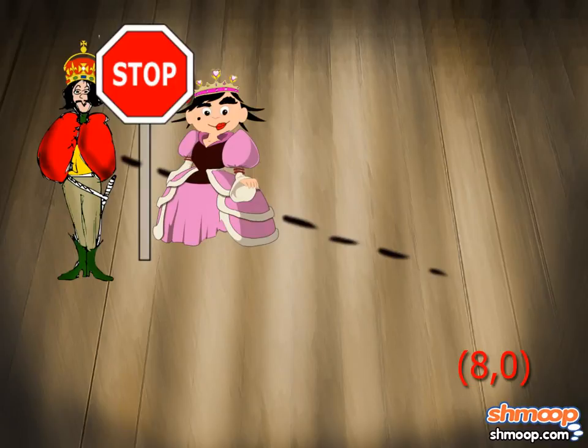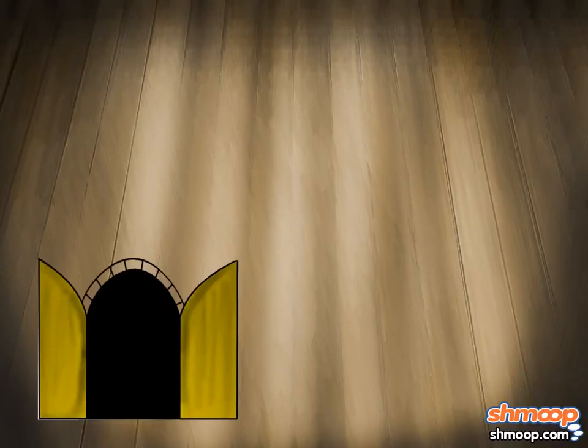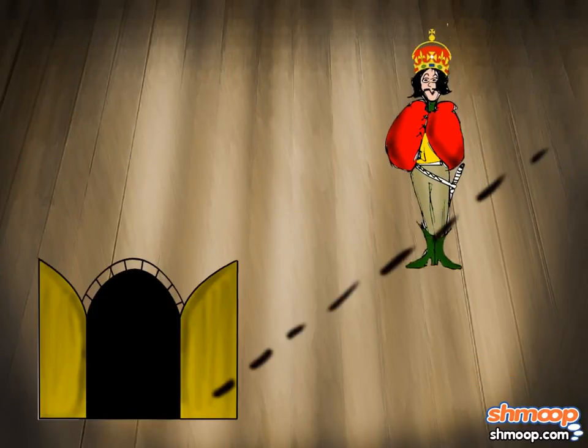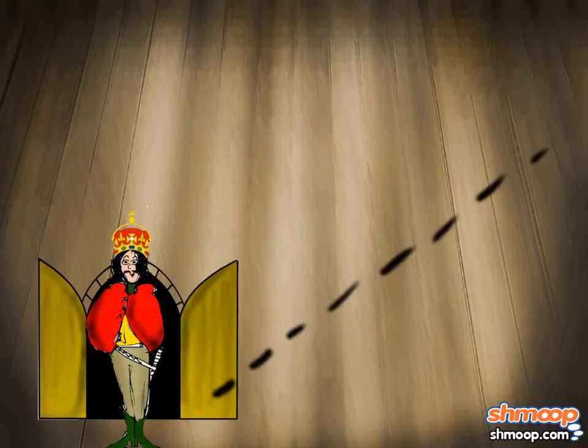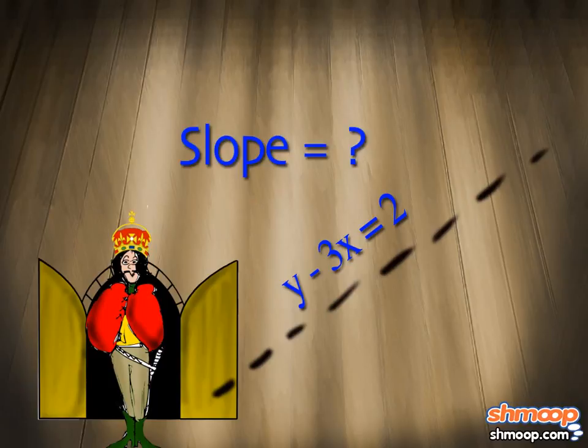But wait! In a game-changing move, the prince runs for the door along a line with the equation y minus 3x equals 2. What slope is the prince's path?